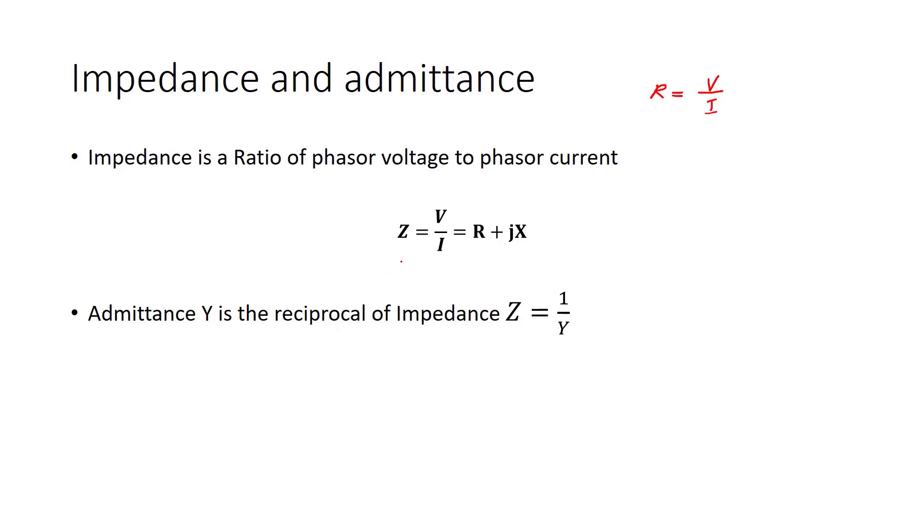But here, in order to find impedance, we have to find the ratio between phasors, not the voltage and current value here. So if we have a voltage phasor and if we have a current phasor, we will find the impedance.